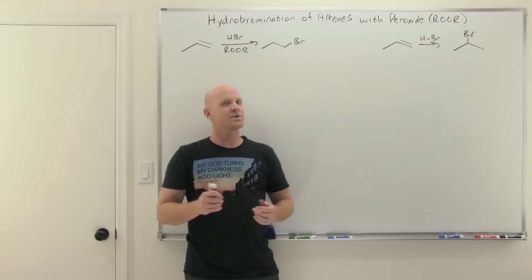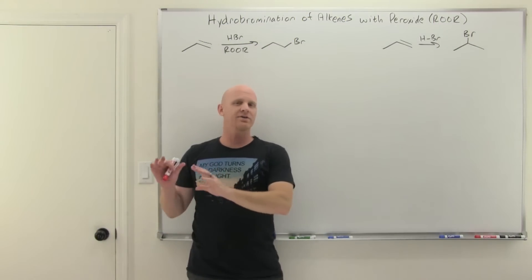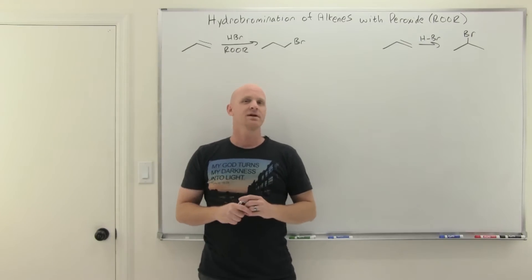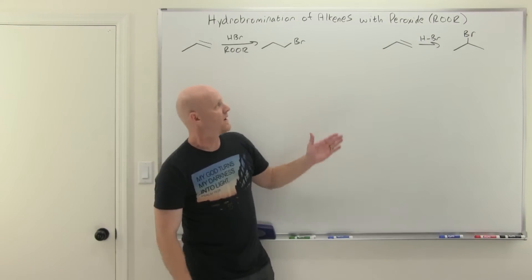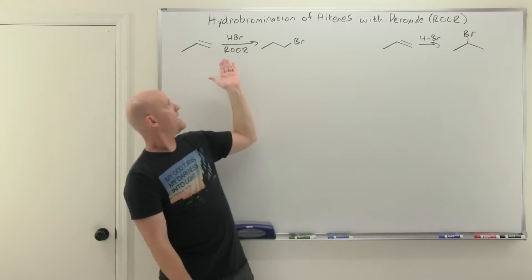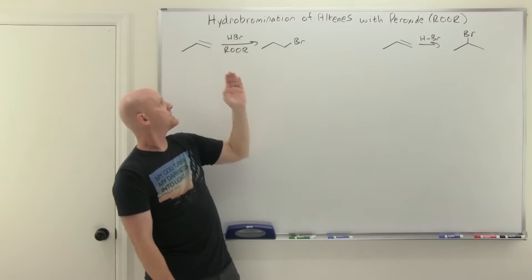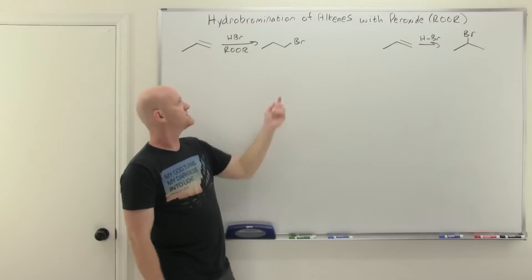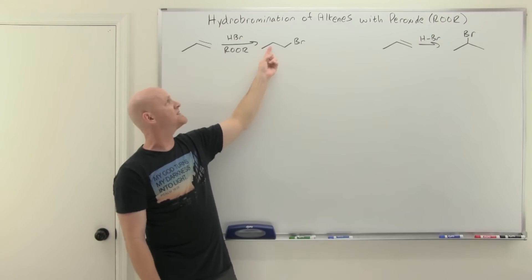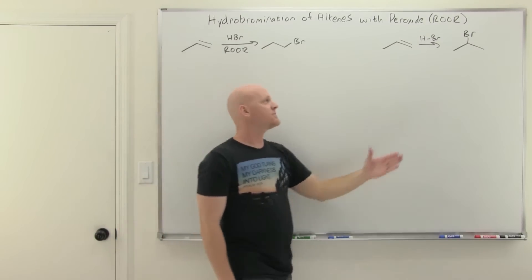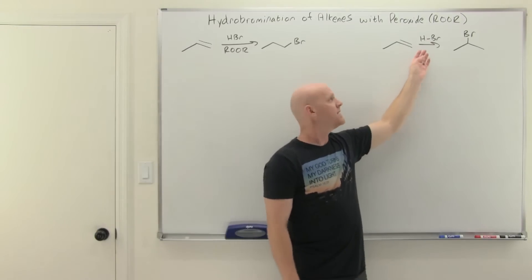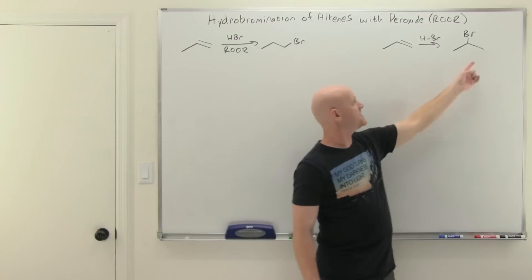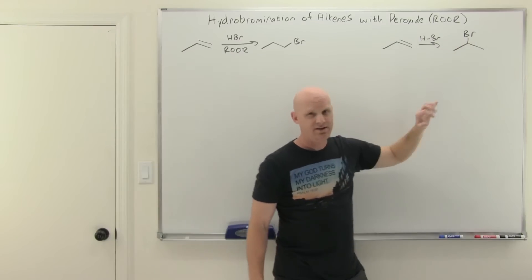This is a lesson we covered earlier when we talked about alkene reactions, but we did not cover the mechanism, and it's specifically that mechanism we're going to cover here. When you add HBr and peroxide, it adds H and Br anti-Markovnikov: bromine ends up on the less-substituted side, H on the more-substituted side. That's different than plain addition of HBr, which adds H and Br Markovnikov — H on the less-substituted side, bromine on the more-substituted side.